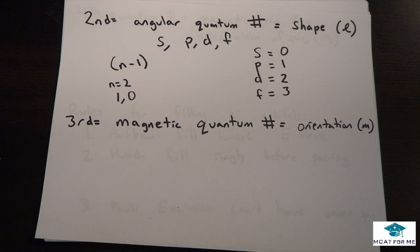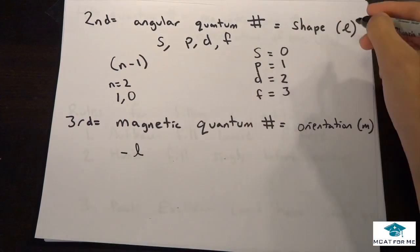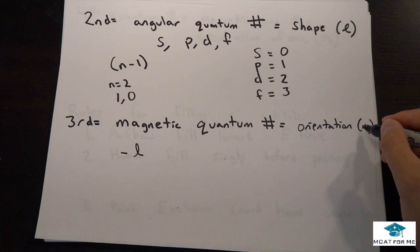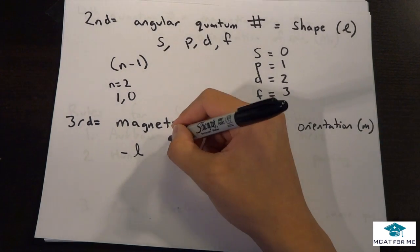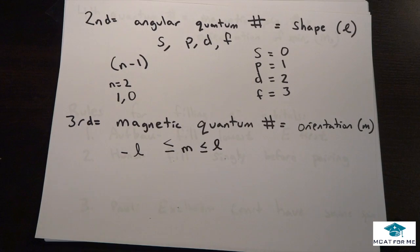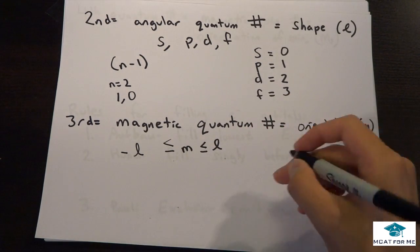So then the third quantum number, the magnetic quantum number, is based on orientation. And so the equation that they give us here is negative L. And so I forgot to mention that angular quantum number is defined by L, and the third quantum number is M. And what this actually is telling us is that it's telling us the actual orbitals themselves.